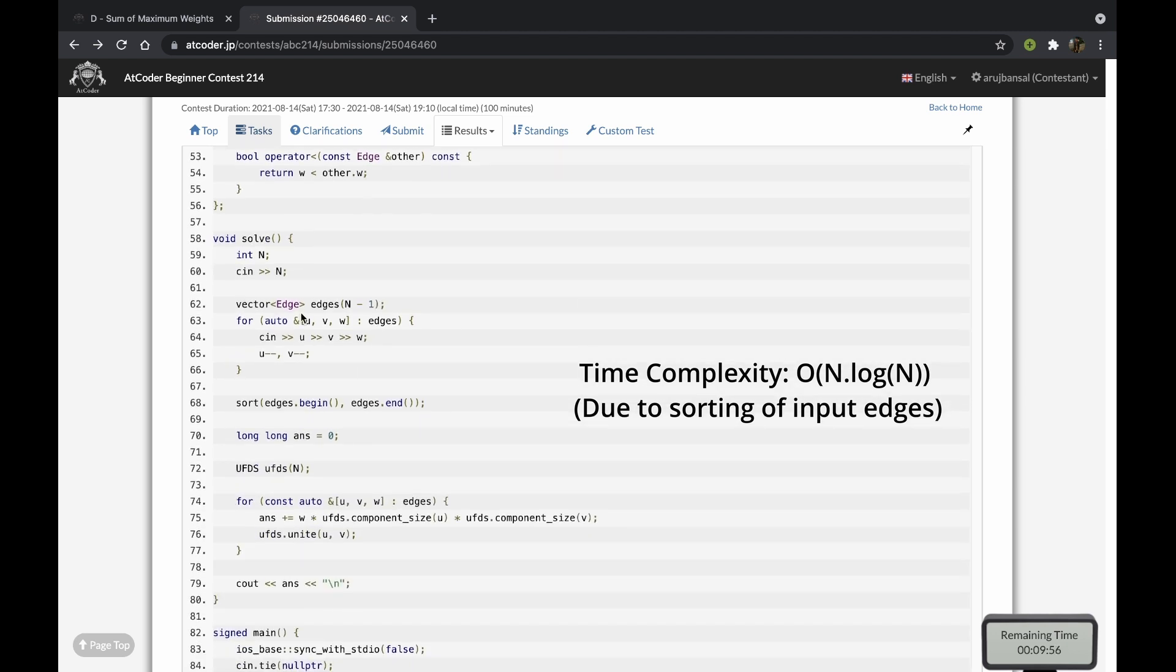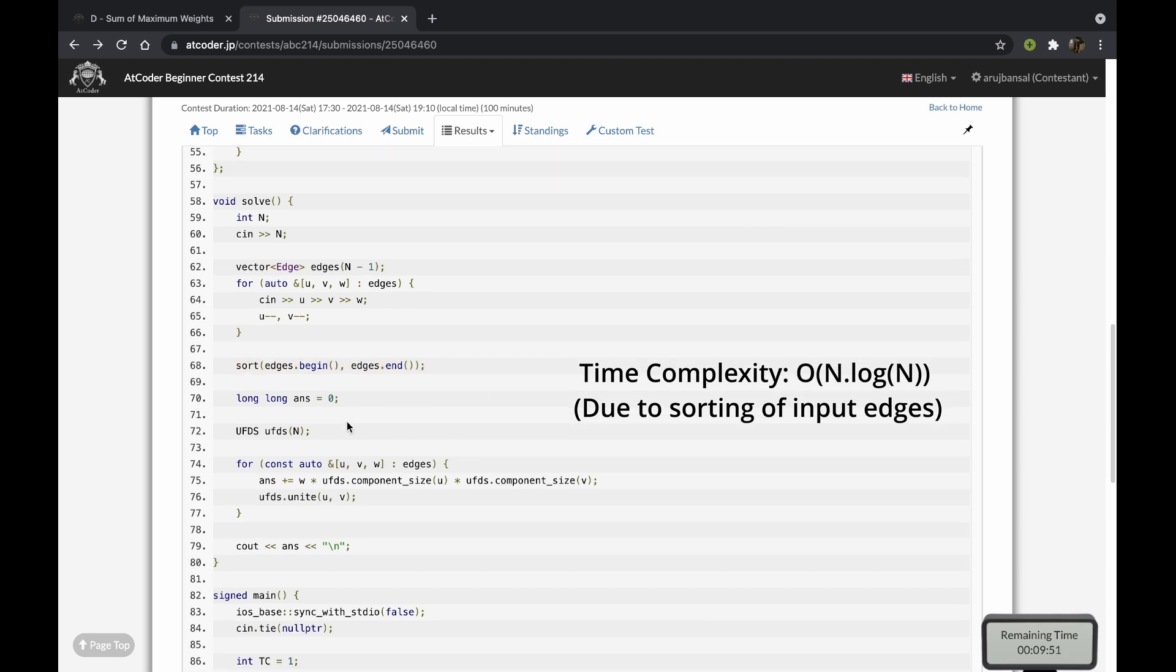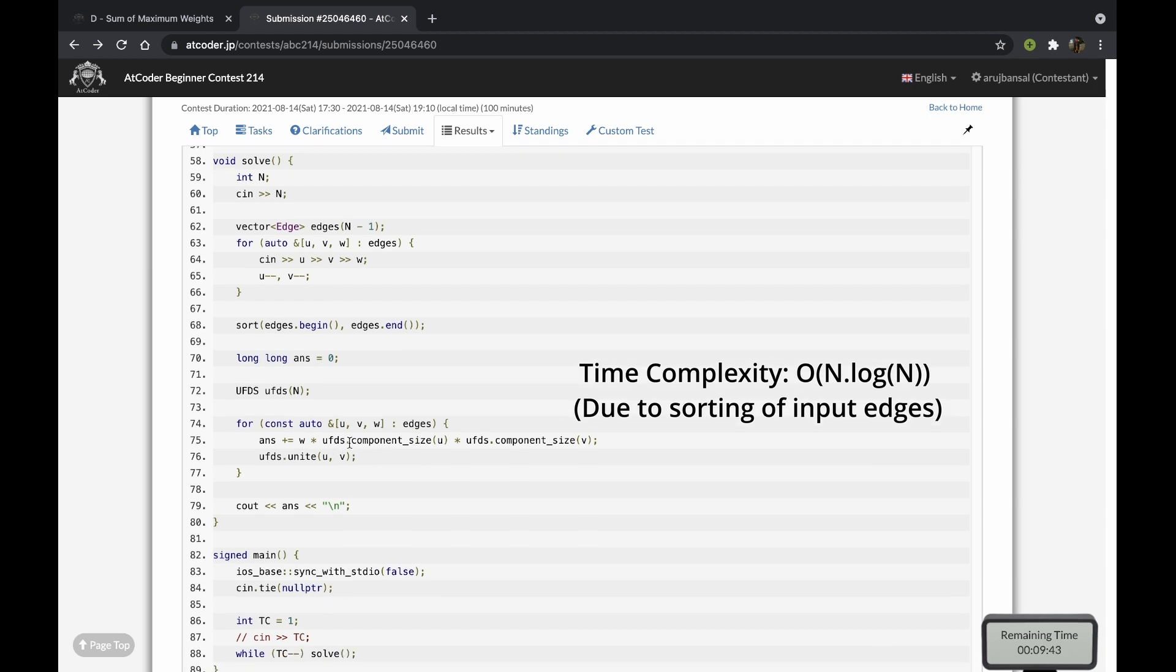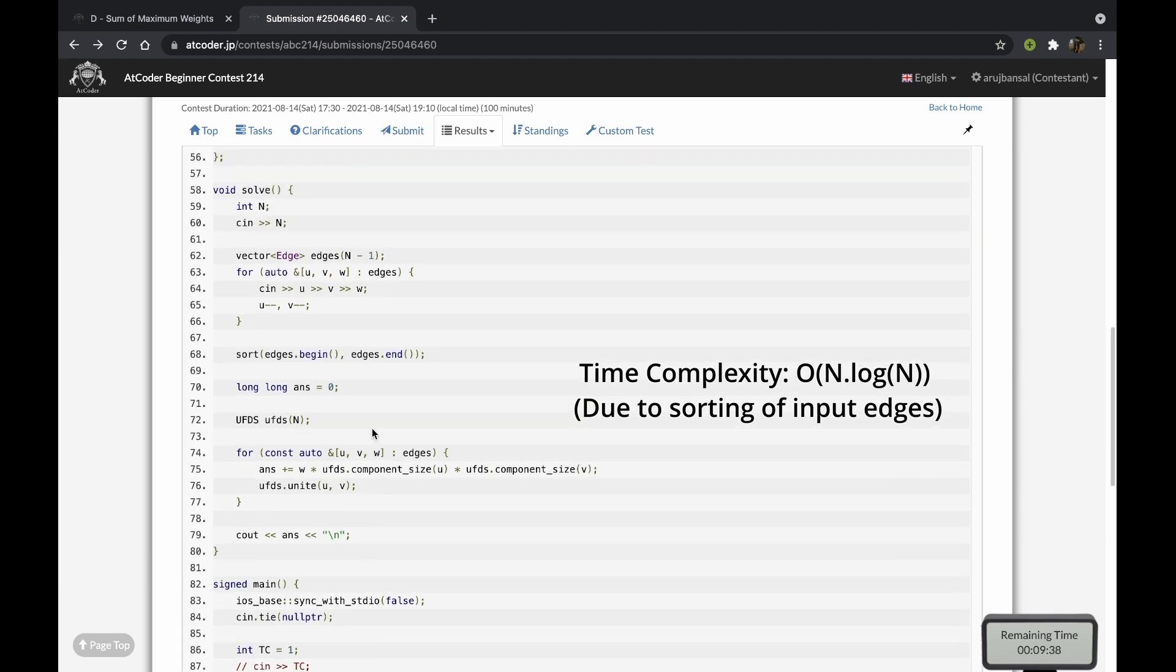So we'll just read in our edges, we'll sort the list according to non-decreasing order of edge weight. After that we account for each edge weight in our answer, which is the product of the component sizes, and then we join these two components. And then we finally print our answer.